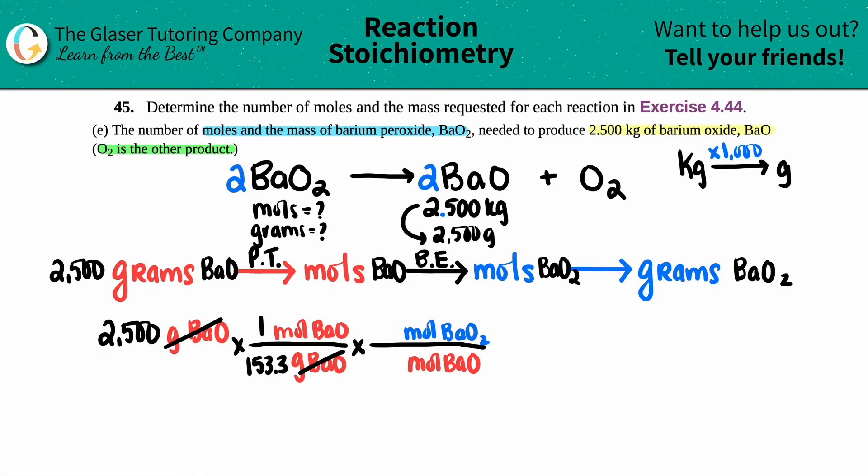Specifically you're going to be using the coefficients, aka the big numbers in front of the compounds in the balanced equation. That's why the balanced equation is so important. Only focus on the compounds that you're actually looking for. So in this case I only care about BaO2 and BaO. I don't even care about oxygen O2. So there's a 2 in front of the BaO2, so I will put a 2 here. And then there's a 2 in front of the BaO, so I'll put a 2 here. Everything's accounted for. So now I can cancel out my units.